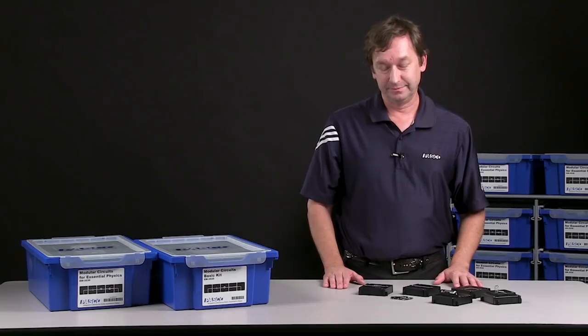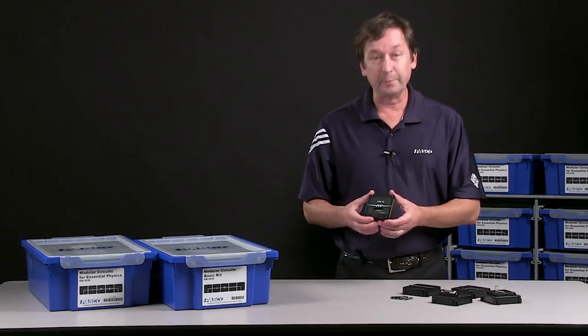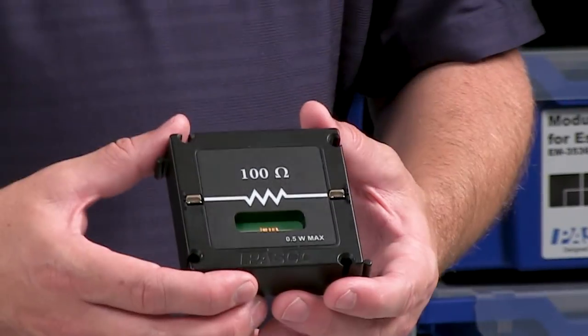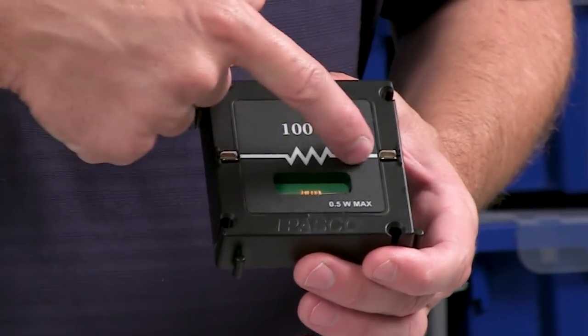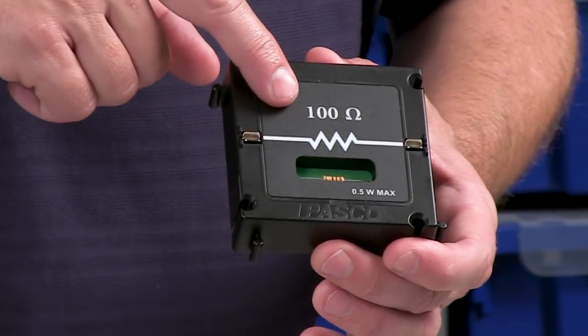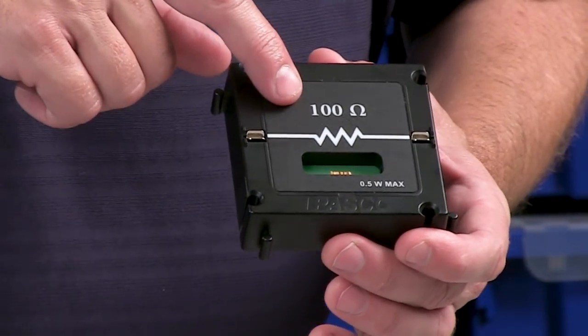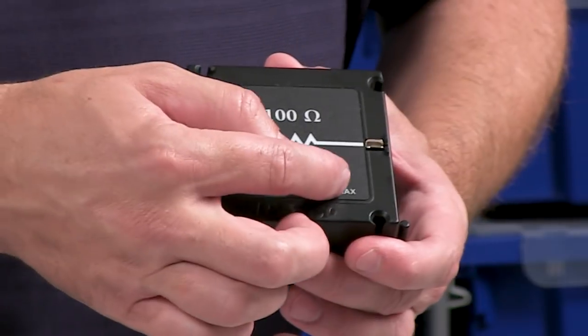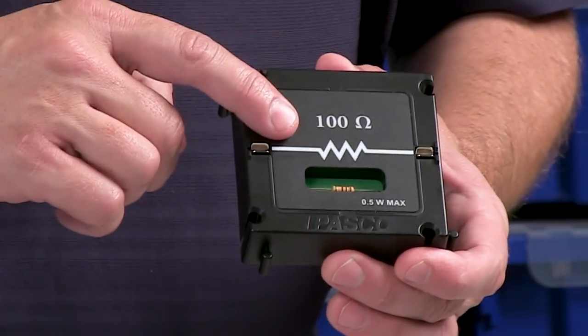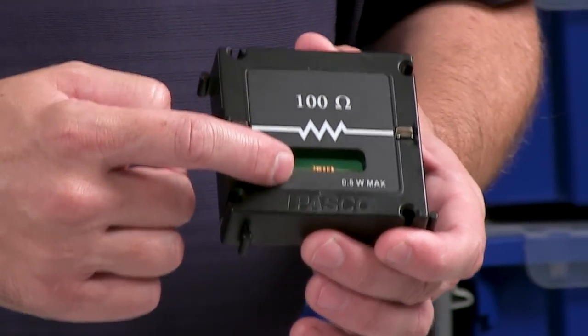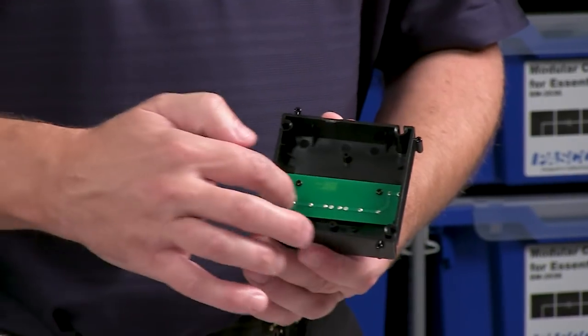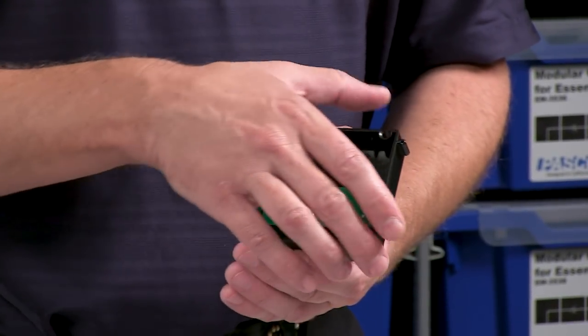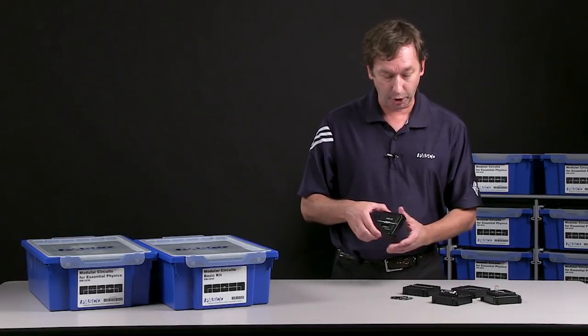Let's take a look at a module. So here's a component from modular circuits, and you can see here that this module is for a resistor. It has this schematic symbol for a resistor and tells us what the resistance is. You can also see that we've exposed the component so that the student can see the schematic symbol and what the physical component is. They can also turn the module over and see the circuit board and see where the component is wired in and how it physically works.